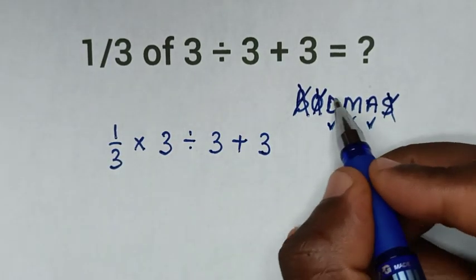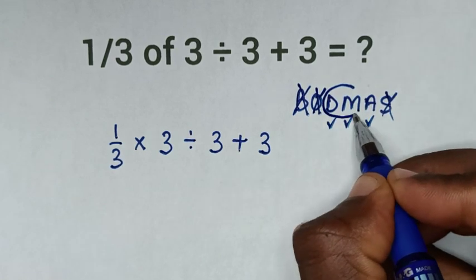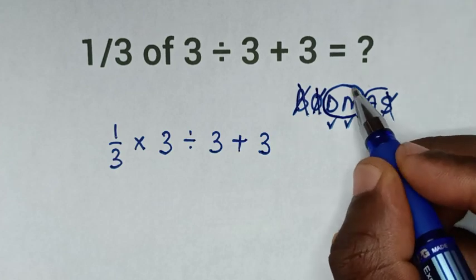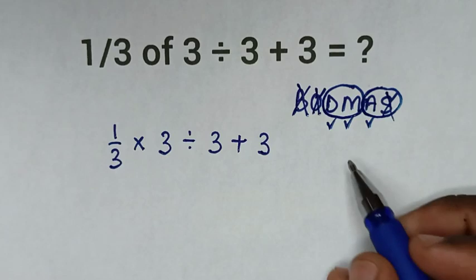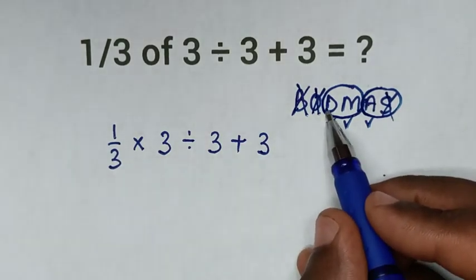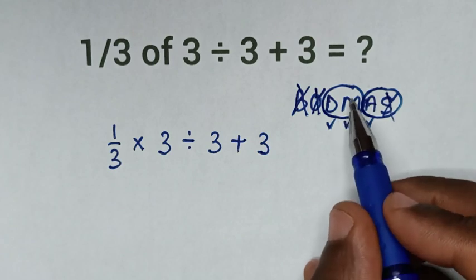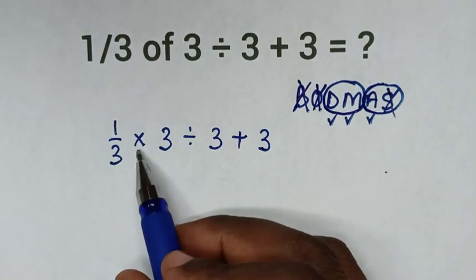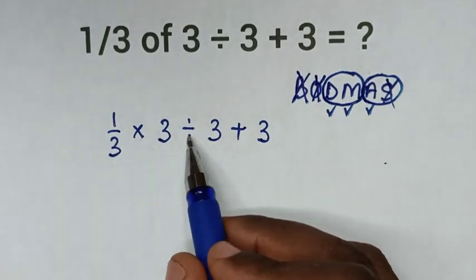Then from here we will place like a group. We will deal first with this group. After I finish this group, we will deal with this group. Now from this group of division and multiplication, we will deal with what starts first. From this problem, it starts first with multiplication, then division.